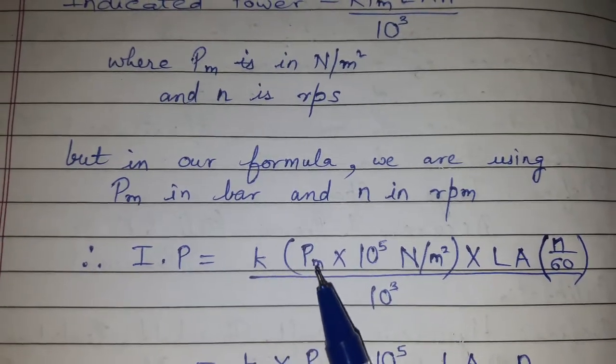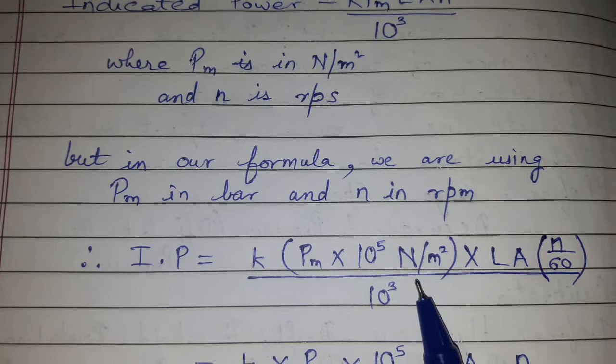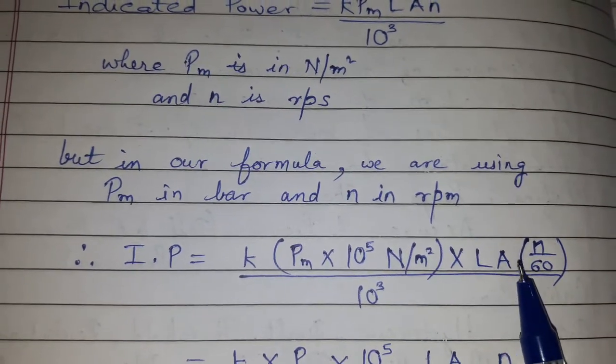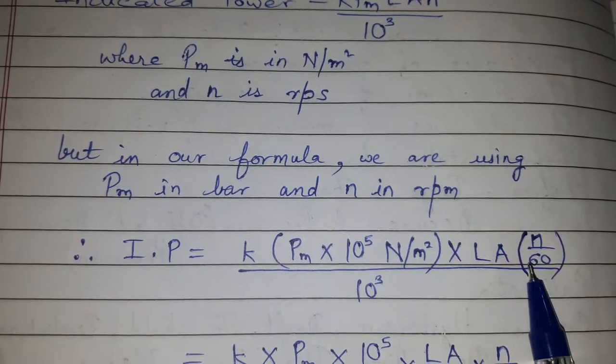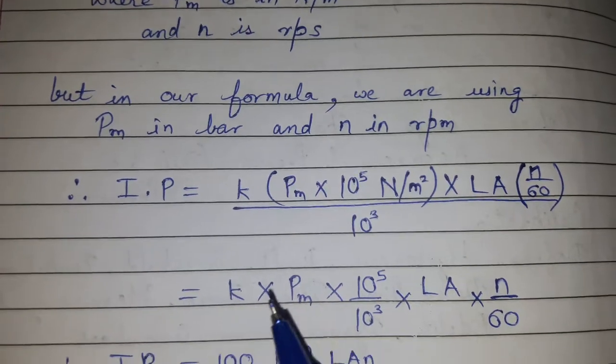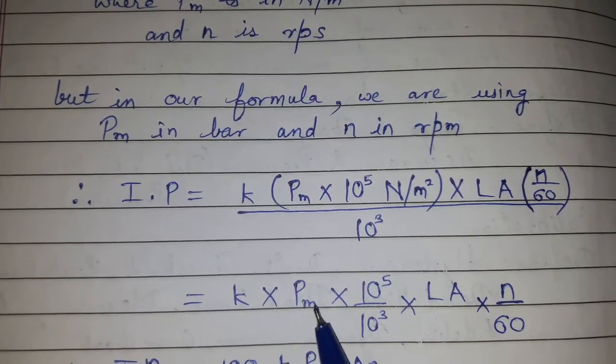So IP equals k times Pm times 10⁵ N/m² times L times A times n divided by 60, and 10³ from the original formula. Because of that, this becomes k times Pm times 10⁵ upon 10³ times L A n divided by 60.